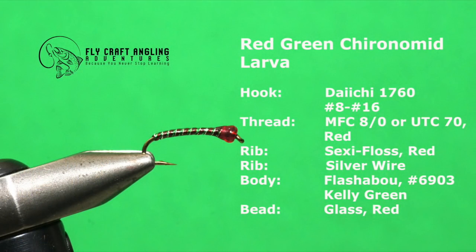Brian Chan's red-green chironomid larva does an excellent job representing perhaps the most underrated stillwater bread and butter food source, chironomid larva or bloodworm. Here are the materials you'll need to tie this great fly.